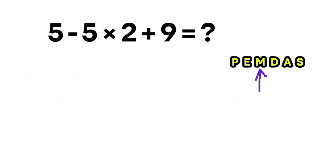The key point is this. Multiplication comes before addition and subtraction. So we cannot start with 5 minus 5. We must begin with the multiplication.